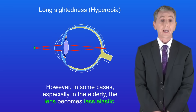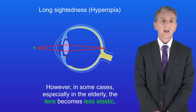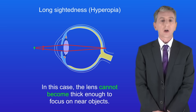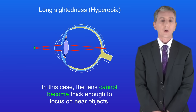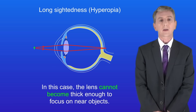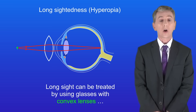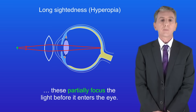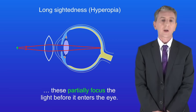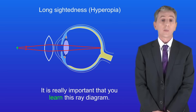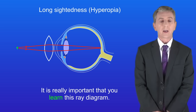However, in some cases, especially in the elderly, the lens becomes less elastic, and the lens cannot become thick enough to focus on near objects. Long sight can be treated by using glasses with convex lenses, which partially focus the light before it enters the eye — and it's really important that you learn this ray diagram.